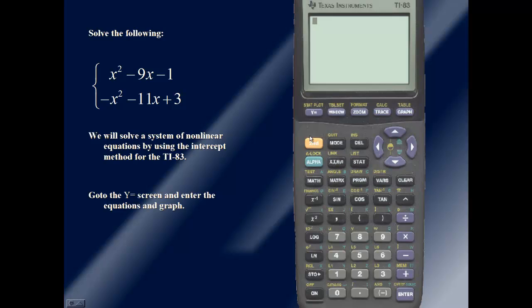Next we'll enter the equations into our calculator and we'll graph. So for y sub 1, I'll put in the first equation x squared minus 9x minus 1. And for y sub 2, I'll put in our second equation, negative x squared minus 11x plus 3. And now we'll graph.